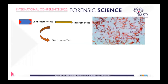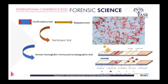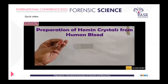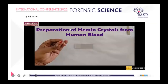The Teichmann test is one of the oldest methods still preferred due to its simplicity. The heme in blood — the prosthetic group of hemoglobin — can be visualized in crystal form. These crystals are heated while mixing with concentrated acetic acid. I will be showing this in a short video. The last method is the human hemoglobin immunochromatography test, which can identify human blood and differentiate it from other species such as animal blood.